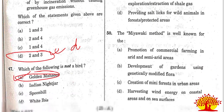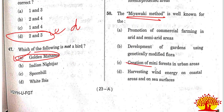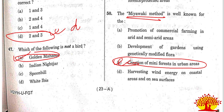Fiftieth question on the Miyawaki method: the Miyawaki method is well known for creation of mini forests in urban areas. It is an urban forestation method. Option C is the right answer.